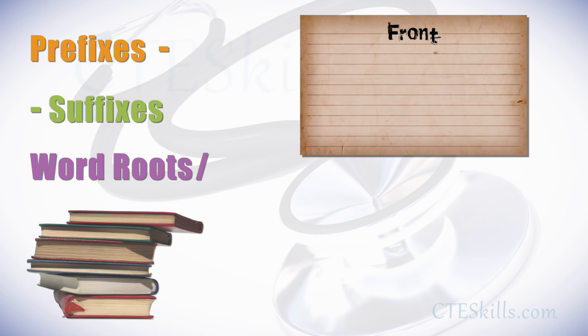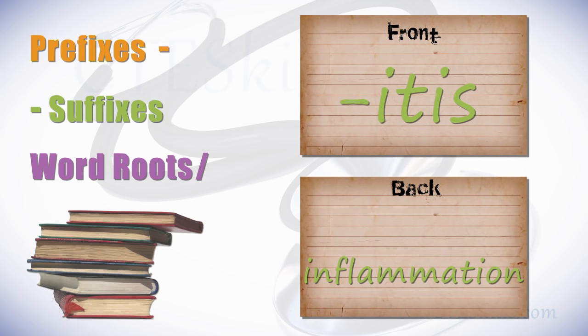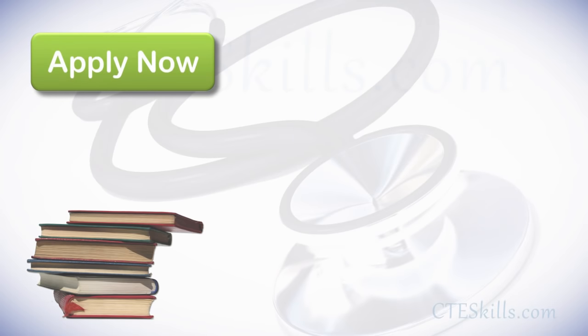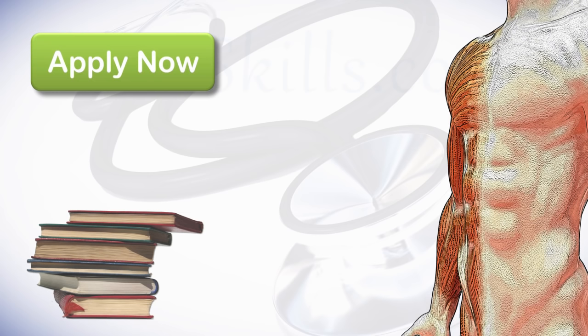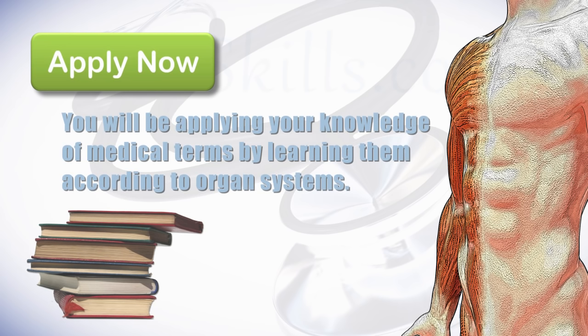A very proven method of learning the meaning of prefixes, suffixes, and word roots is by using flashcards — very simple to do. You can place a prefix, suffix, or word root on the front of a card and the meaning on the back. This easy study method is a great tool in learning medical terminology. But the best way to learn anything is to apply it. Throughout this series of videos, as you learn about the anatomy and physiology of the human body, you will be applying your knowledge of medical terms by learning them according to organ systems.